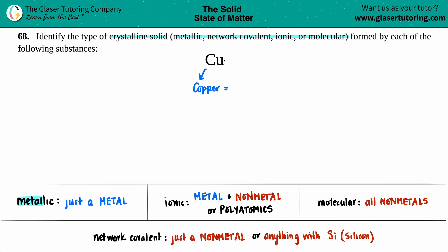And copper, for sure on the periodic table and everywhere, is a metal. It is just a metal, so we don't have to look any further. We know that this is going to be a metallic crystalline solid.